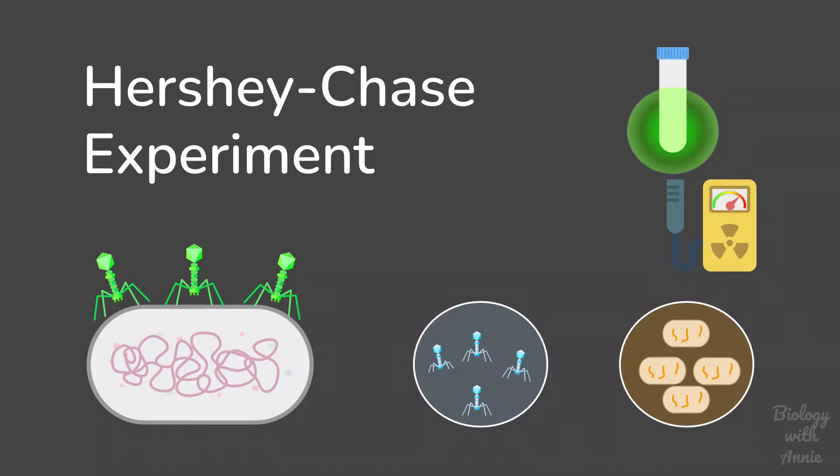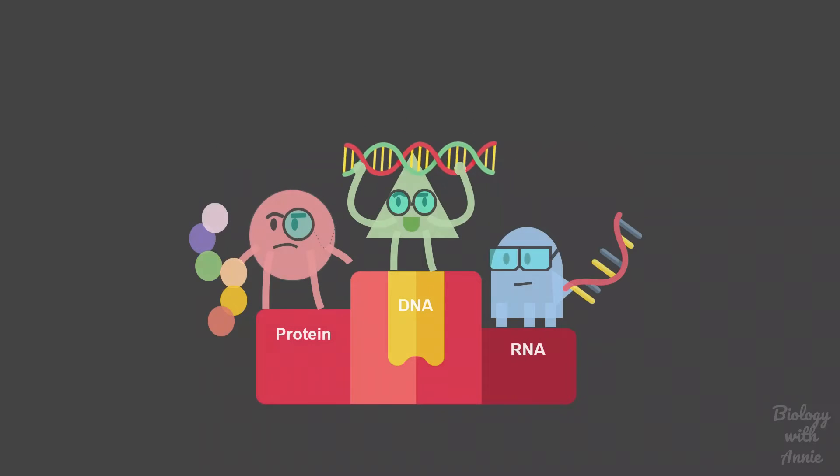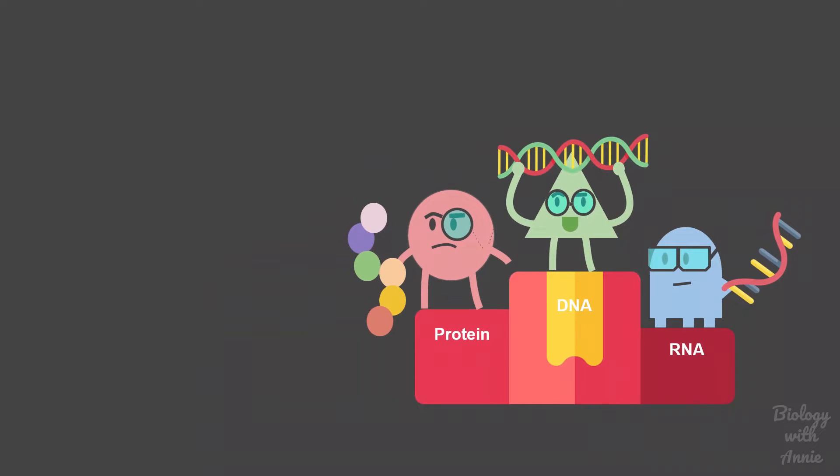For decades, scientists were skeptical about whether the genetic material is made up of proteins or DNA. In 1944, Oswald Avery provided evidence that genes were made up of DNA, but many biologists were unwilling to accept this new theory since it was based on a single experiment.